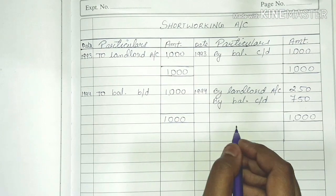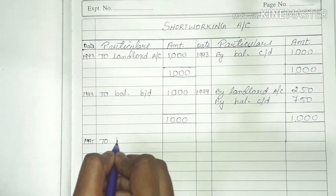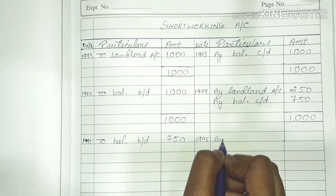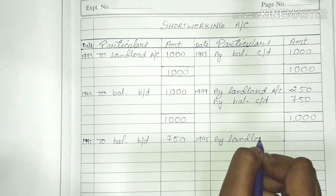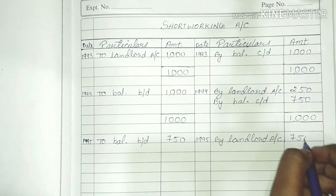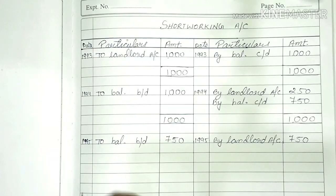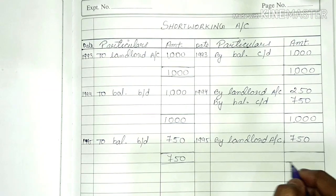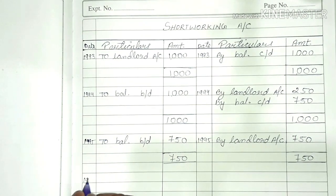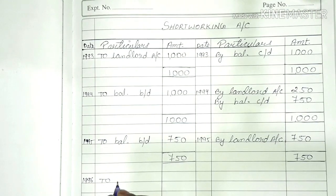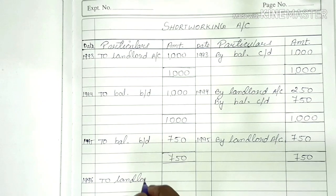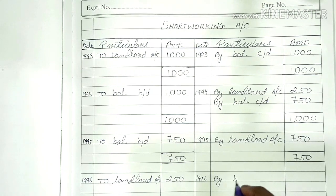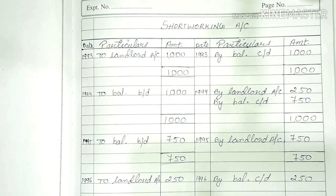This closing balance opens in third year. In 1995, to balance B/D: $750. In 1995 we have recouped — by landlord account. Then in fourth year 1996, total: $750. Now in 1996 we have short working of $250 added — to landlord account: $250. This will be closed in 1996 by balance C/D: $250. This is our short working account.